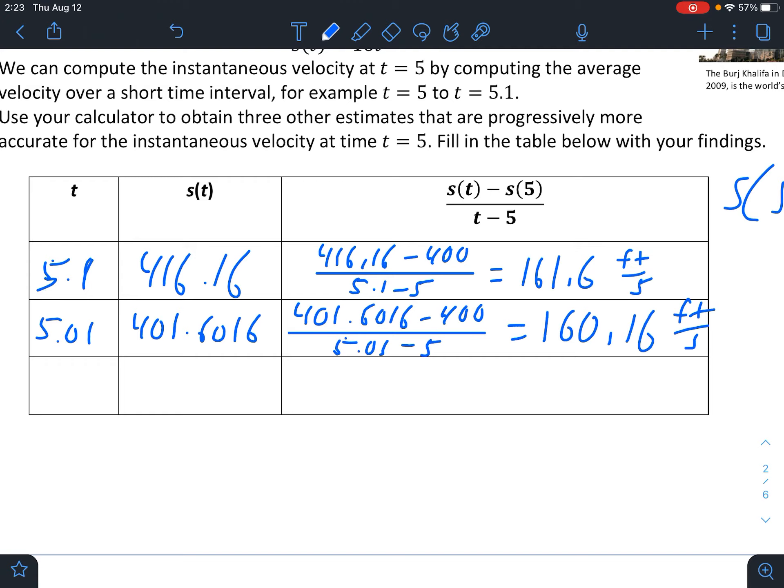Let's get even closer if we can, as close as we possibly can. 5.001. So S(5.001) is 400.160016. You want to write down at least three numbers, but you want to take from the calculator the best answer you possibly can. So when we do this next formula in our calculator, use the answer you see in your calculator screen right now. So 400.160 minus 400 over 5.001 minus 5, and we get 160.016 feet per second.